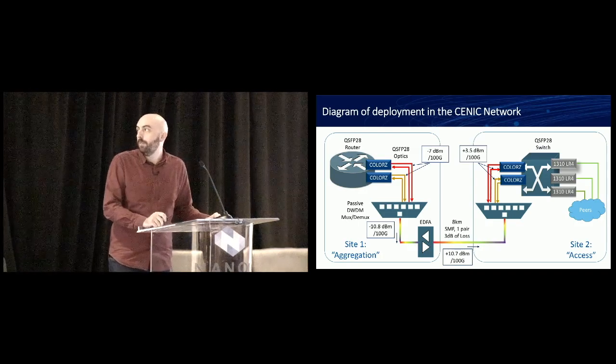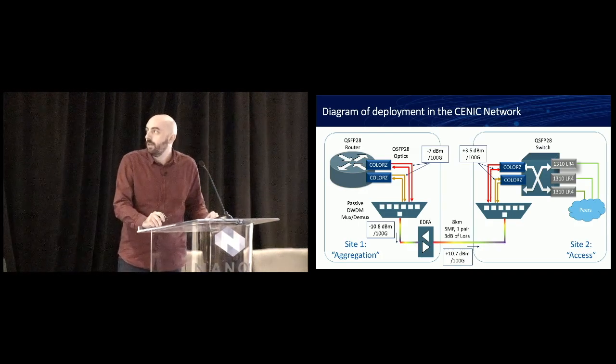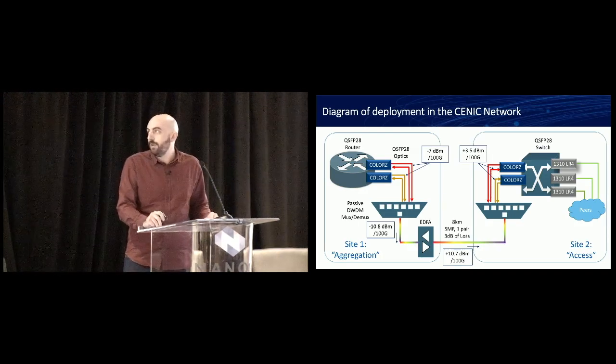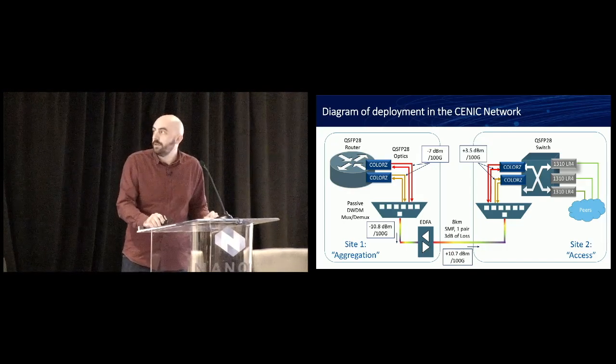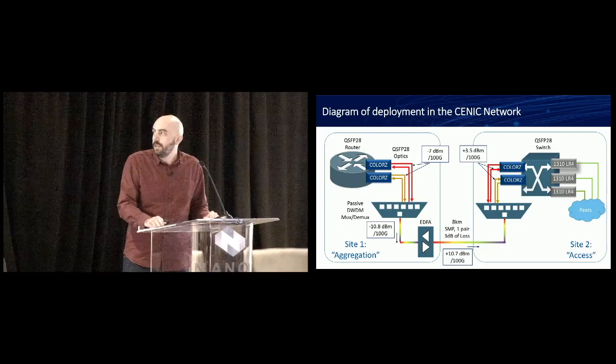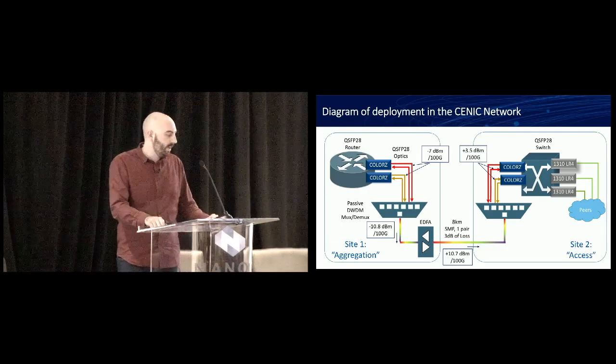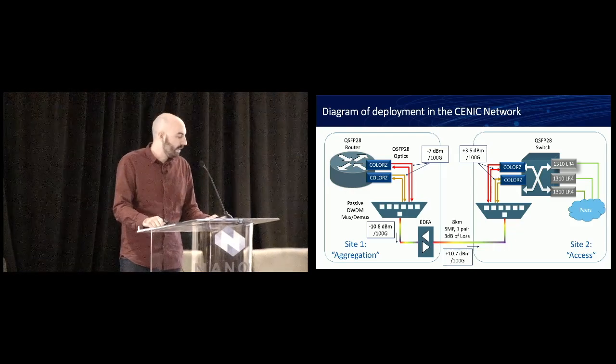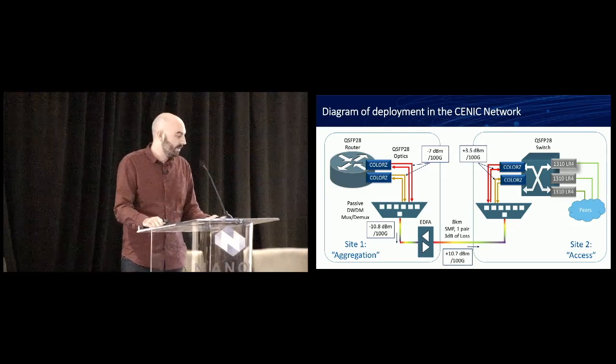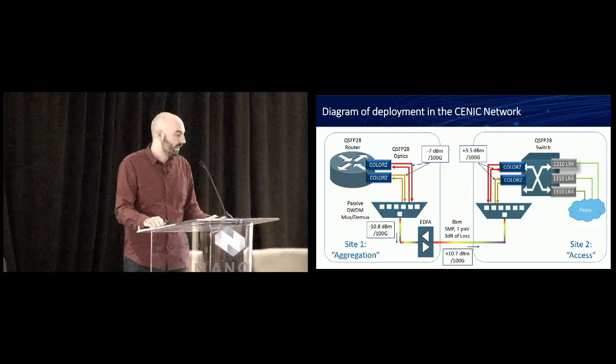Let's take a look at the diagram of where we deployed these. You can see on one side, we have the router with the COLORZ modules in it in the QSFP28 ports. In this example, we ran two of them. We connected those into a passive DWDM 100 gigahertz-based mux. We dropped those through there into an amplifier, sent that across the line fiber, demuxed it on the other side, and dropped it into the optics.